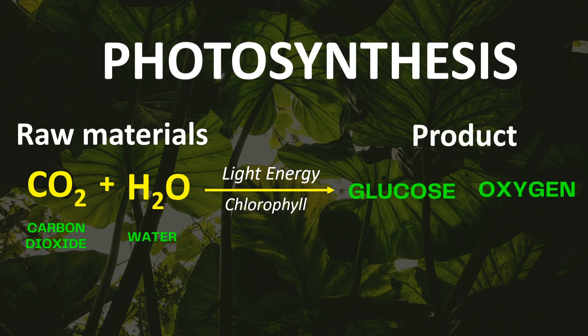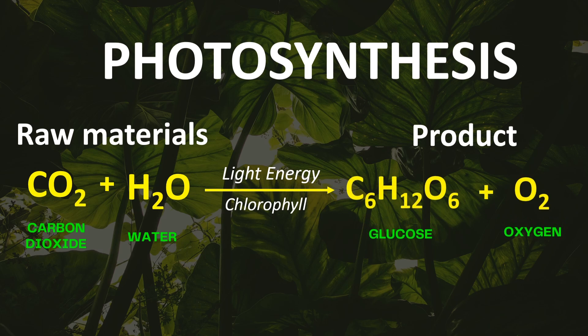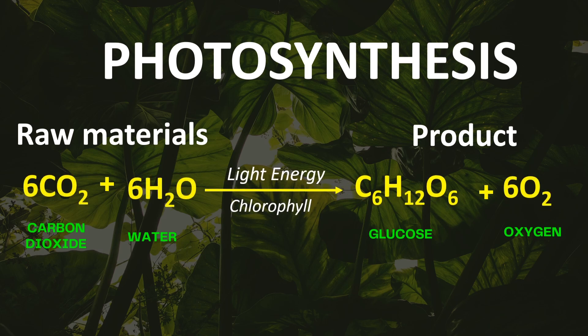Photosynthesis is a chemical process which can be explained by this general equation. The raw materials are carbon dioxide plus water, converted through light energy inside the chlorophyll, and the products are glucose and oxygen. This is the balanced equation of photosynthesis: six molecules of carbon dioxide plus six molecules of water form one molecule of glucose or sugar and six molecules of oxygen.